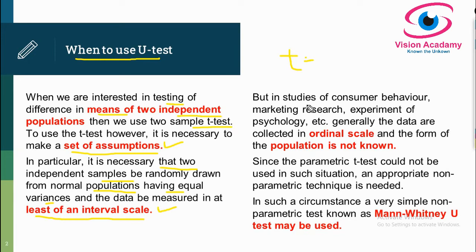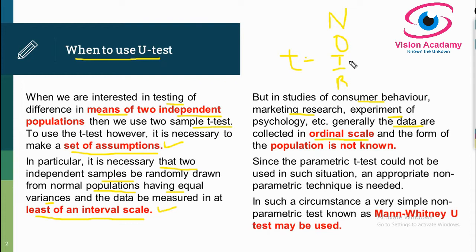However, in studies like consumer behavior, marketing research, and psychology experiments, the data collected is often on a non-ordinal or ordinal scale. There are different types of measurement scales: nominal, ordinal, interval, and ratio. To apply the two-sample t-test, data must be at least on an interval scale. But in some situations, data is collected on an ordinal scale.